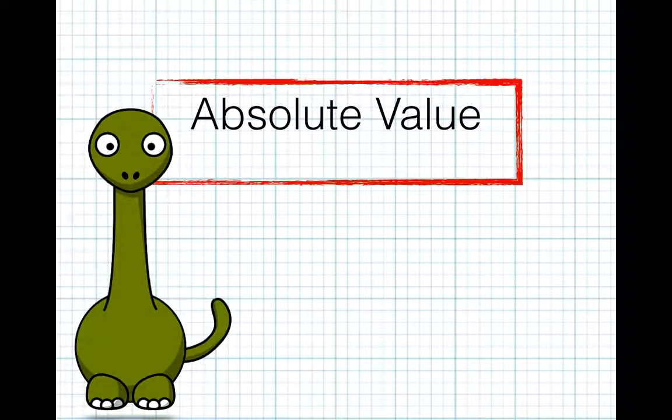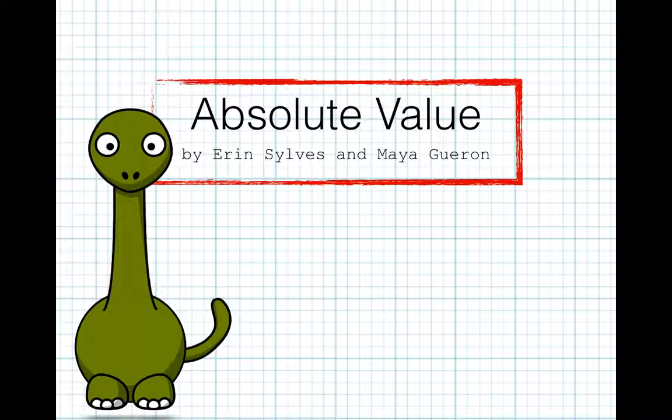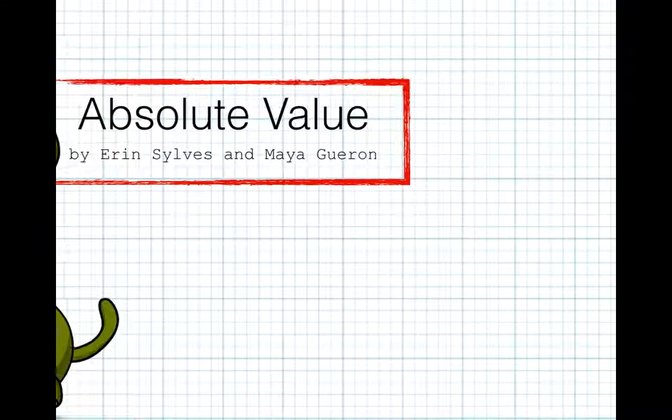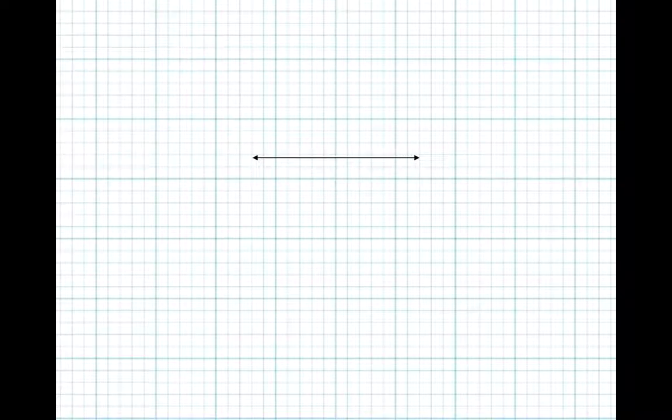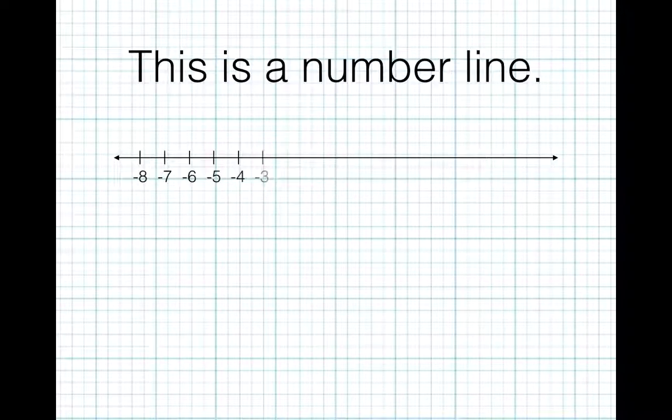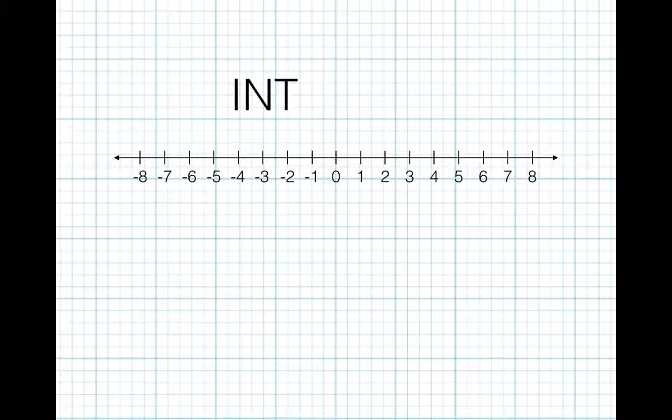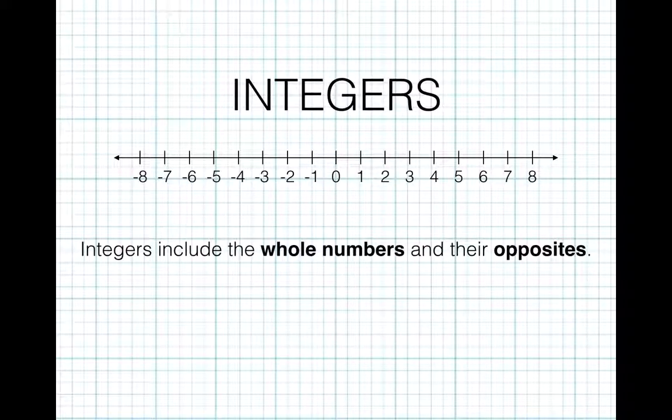Absolute Value by Aaron Silvis and Maya Garan. This is a number line. It shows integers. Integers include the whole numbers and their opposites.